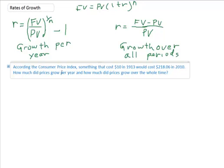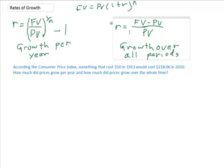According to the Consumer Price Index, I just went to the Department of Labor and looked at the Consumer Price Index. And it looks to me that something that cost $10 in 1913 would cost about $218.06 in 2010. What's the growth rate in prices over this time period? Both annually, this one, and over the whole period. Well, let's set it up.